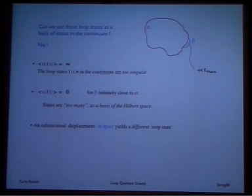Now, can you do the same on the continuum? The answer is no, essentially because these are too singular. If you move infinitesimally one of these loops in the continuum, assuming this is an orthonormal basis, you get an orthogonal state. And if you take this as a definition of a Hilbert space, you define something much larger than the Hilbert space that you want.